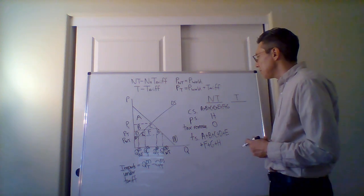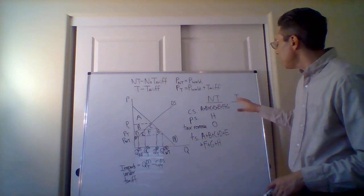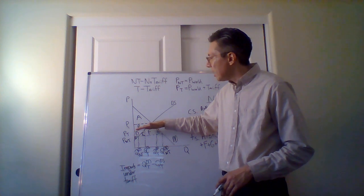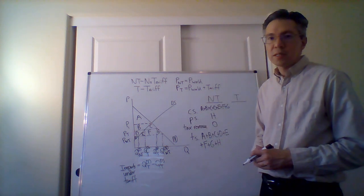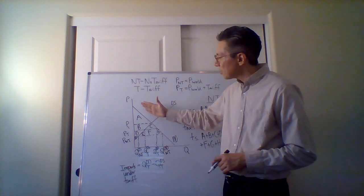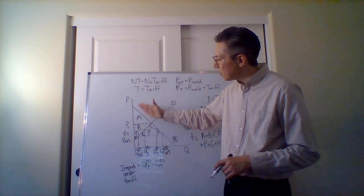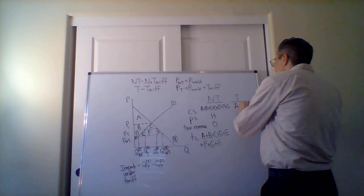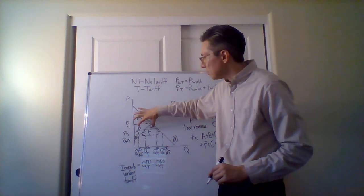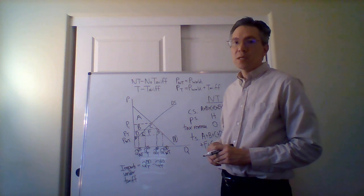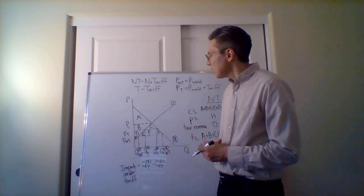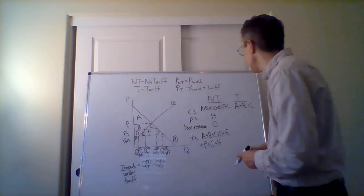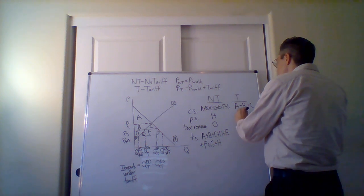So what happens if there is a tariff? The price is now PT. The consumer surplus — the net benefit to consumers — is the area below the demand and above the price, so in this case it's only A plus B plus C. What about producer surplus? The price is higher, so it's below this price and above the domestic supply, giving us D plus H.